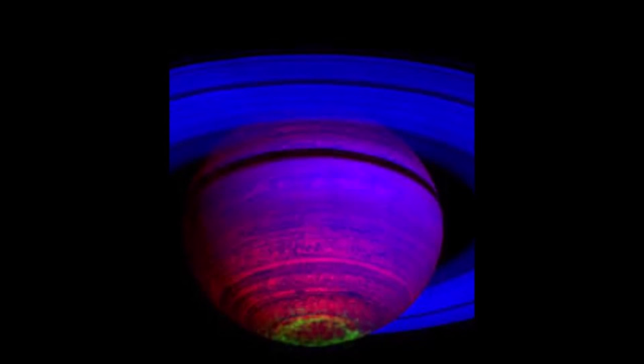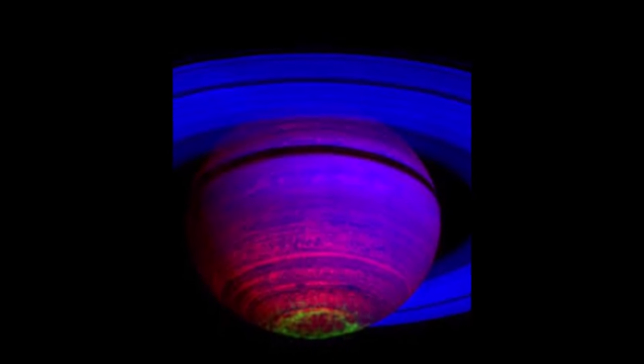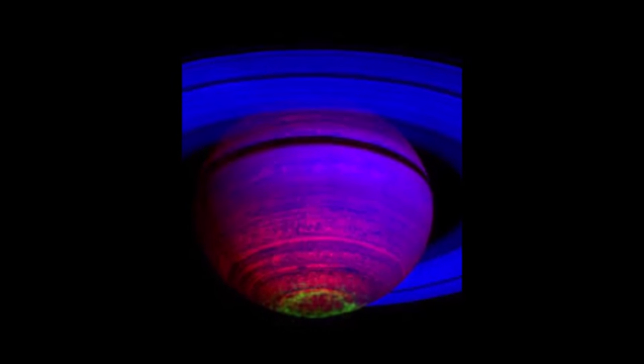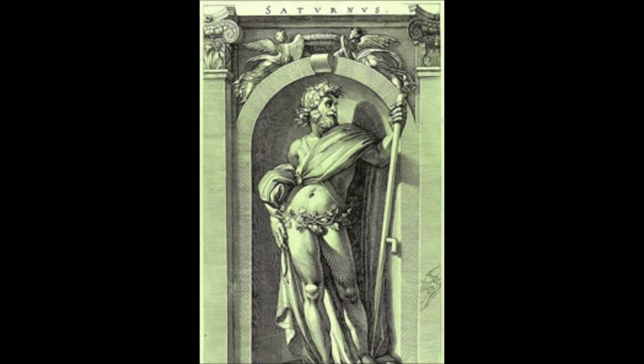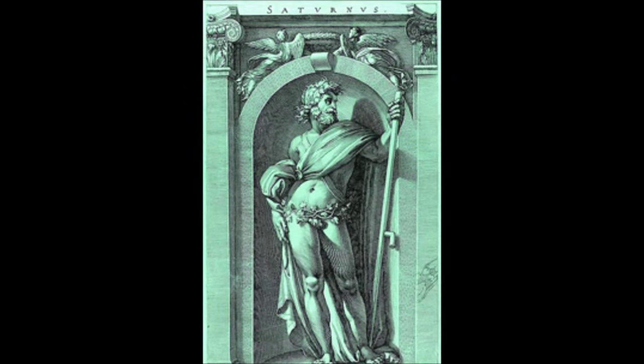Did the ancients know Saturn had rings before the invention of the telescope? In the image of Saturn by Caravaggio, note the encircling vines around the god's hips.